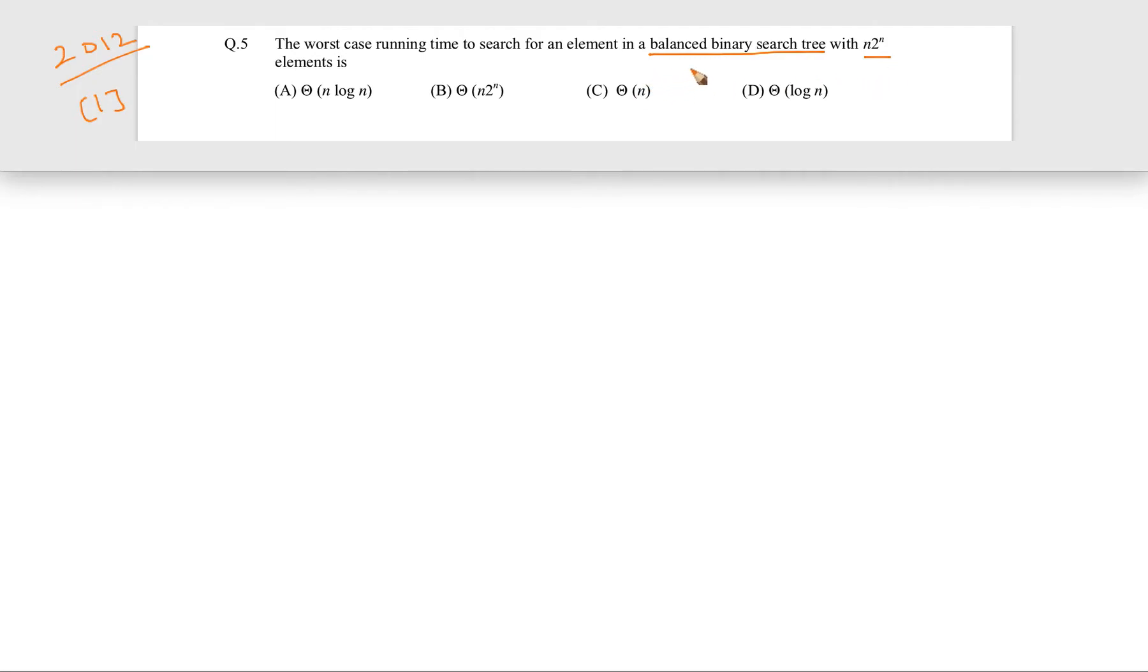And also it is given that the binary search tree is balanced. So, for example, it is not skewed, it is sort of balanced. So whatever is the number of nodes, let's say the number of nodes is n, then its height is going to be of order log n. And that's why the worst case running time for searching an element in a balanced binary search tree is log n.